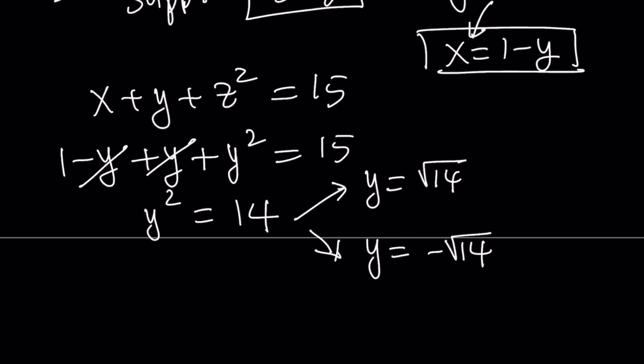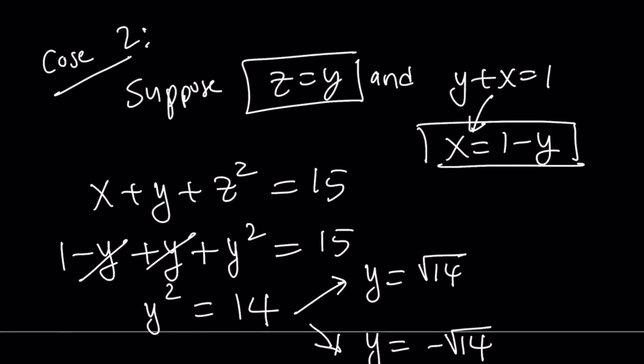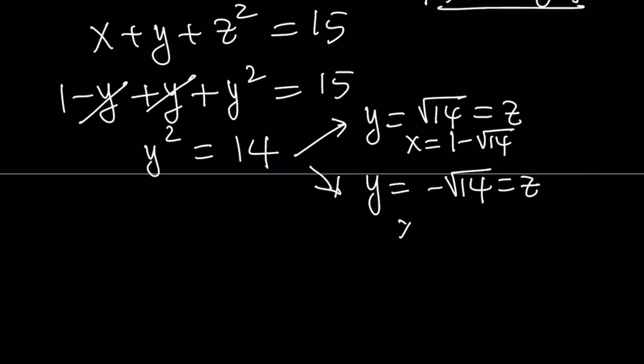We don't have any conditions or requirements on y, z, x being positive. They can be any real number. So both solutions are fine. Now let's get back to the other conditions. In case two, we said that z is equal to y. So this is equal to z. But what about x value? x is 1 minus y. So if y is equal to square root of 14, x is going to be 1 minus square root of 14. And if y is equal to negative square root of 14, x is going to be 1 plus square root of 14. Don't worry, I'm going to write them as ordered triples. And now you're going to get to see the solution.